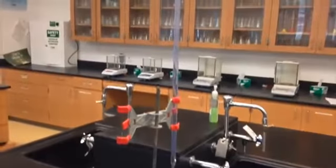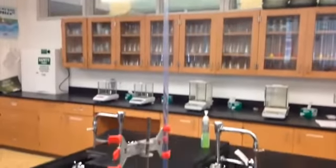This is the proper setup for titration. Place the burette in the burette clamp and then position the Erlenmeyer flask underneath it.